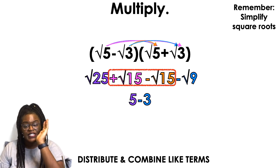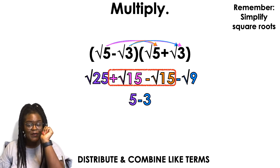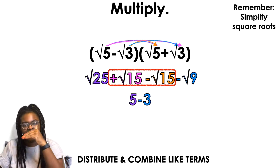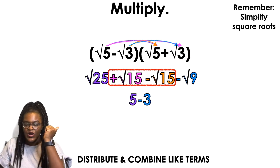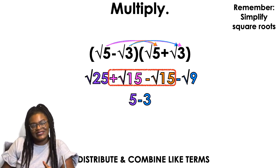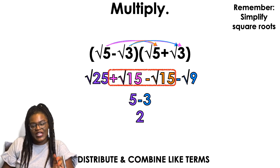My negative square root of 15 and my positive square root of 15, what happens to them? Cutting them out of here, okay? And then radical 9 is actually 3, so minus 3. And 5 minus 3 is 2. So good, right? I know, I know, I know.